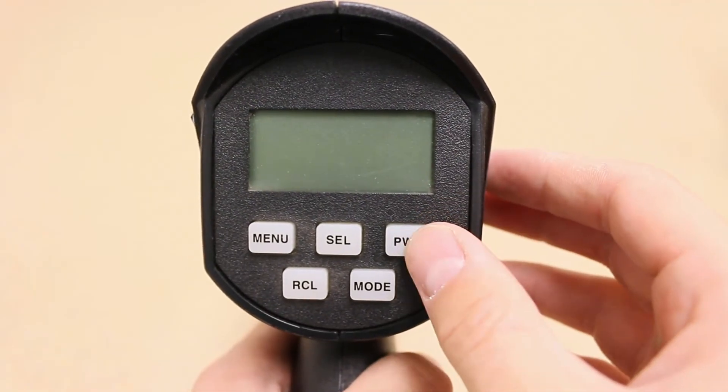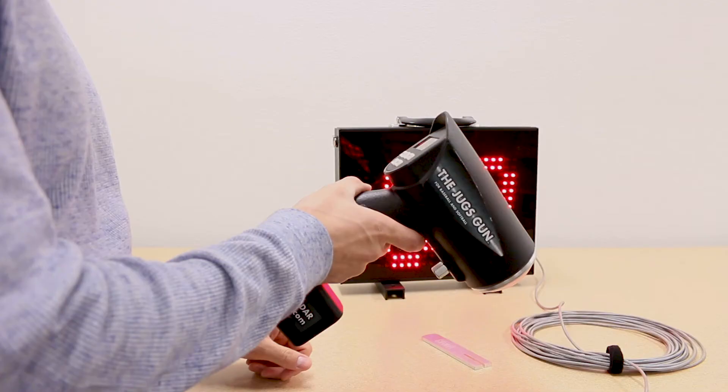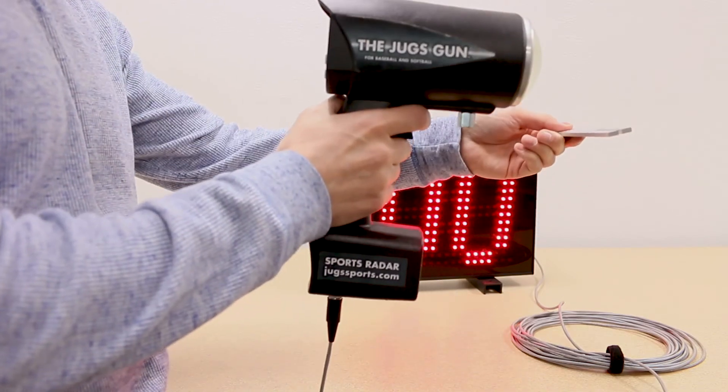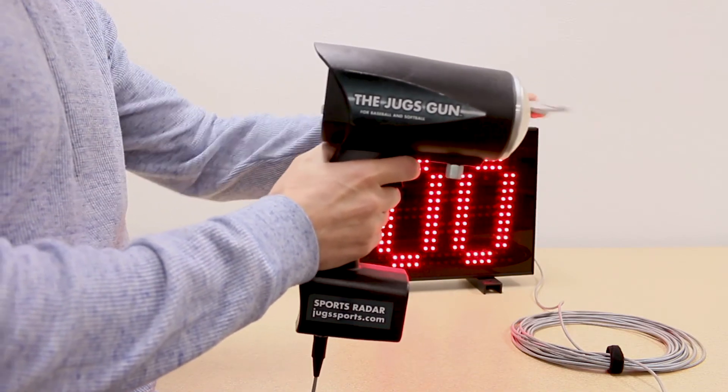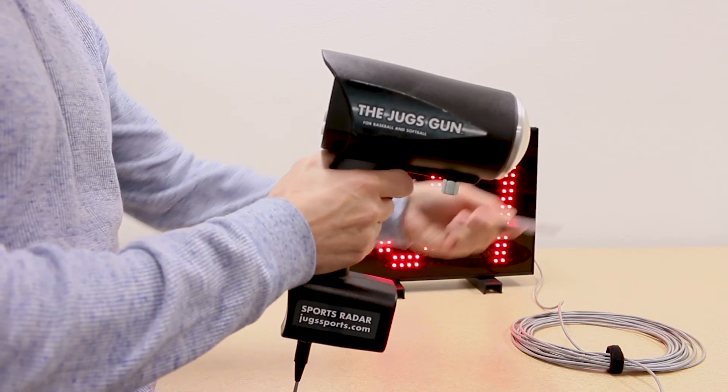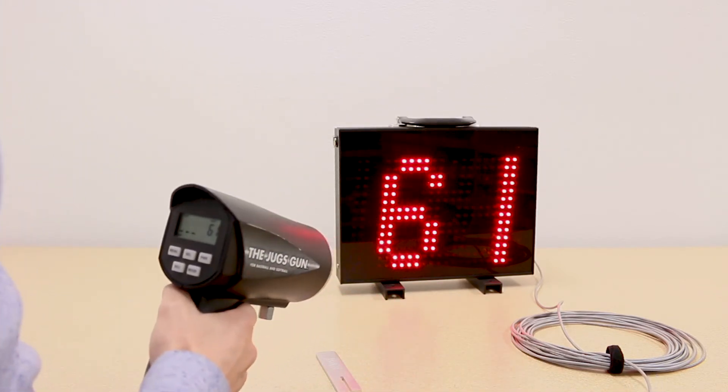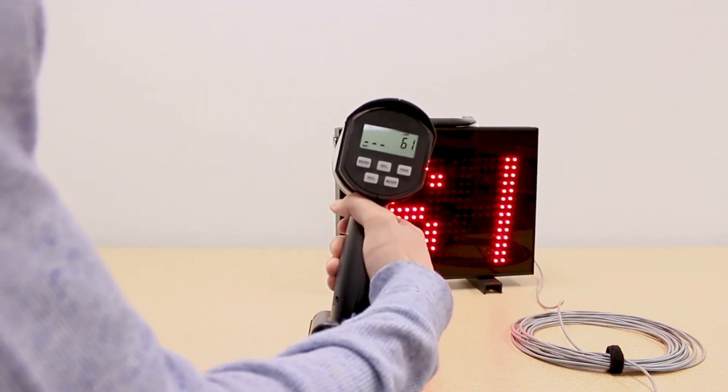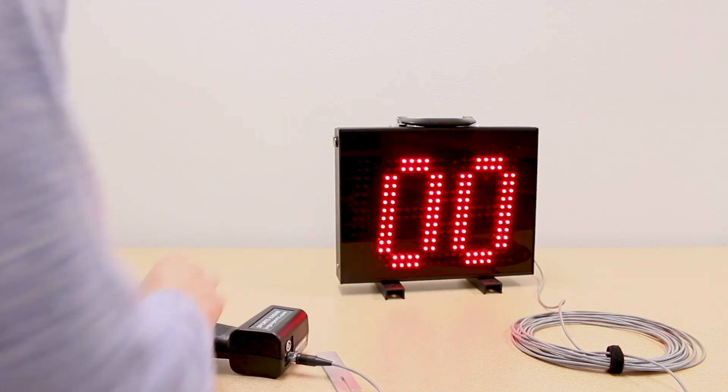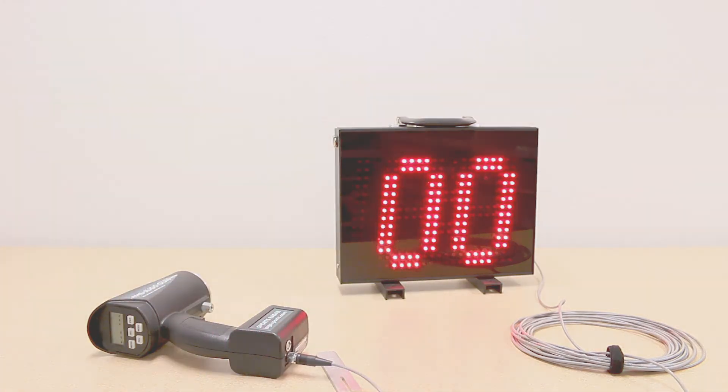Tap the power button on the radar gun to turn it on. We can use this tuning fork to create a test signal. We're going to tap this against the front of the radar gun and pull the trigger at the same time.